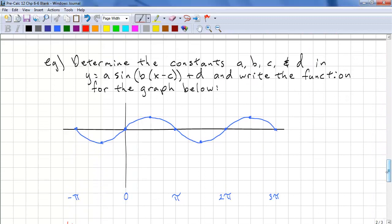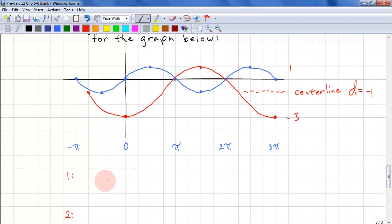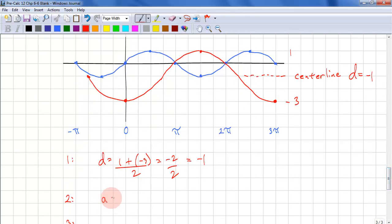So here's an example. Our center line is here. d equals negative 1. We can also calculate this from 1 plus negative 3 over 2, which is negative 2 over 2, and that's negative 1. Our amplitude is 1 minus negative 1, the center line. And that's 2.